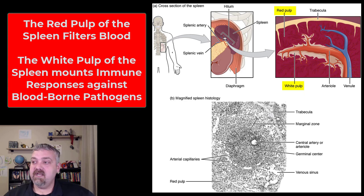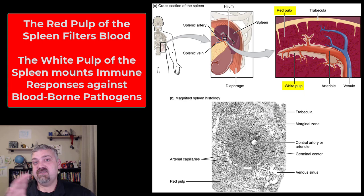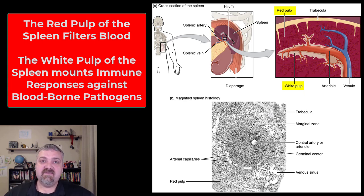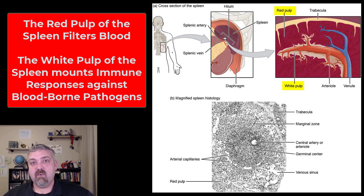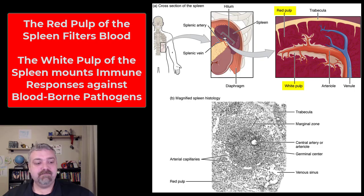The nice thing about your lymphatic system is since lymphatic fluid flows a lot more slowly than blood, it gets a real good look at what's going on in there. So that's one advantage of having these 500 to 600 lymph nodes and having the white pulp of the spleen. Okay, that's an introduction to the spleen. I hope it helps. Have a wonderful day. Be blessed.